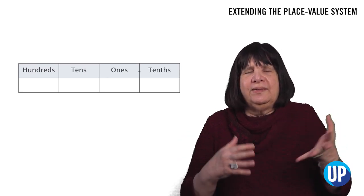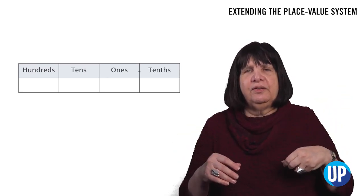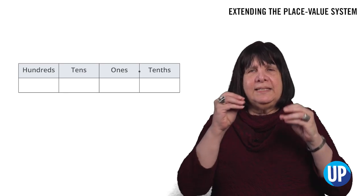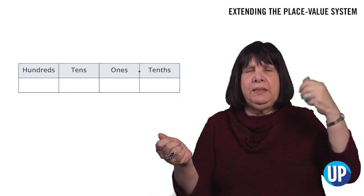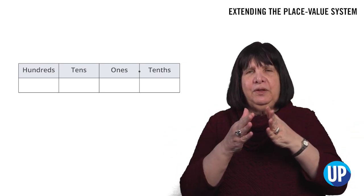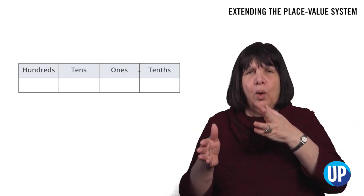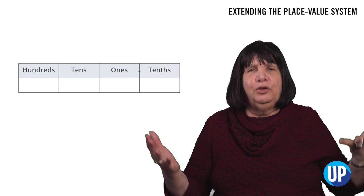If we do, we lose the symmetry of the place value system because what we want is 10 being the opposite of tenths and hundreds being the opposite of hundredths. And if you have two columns in the middle with ones and a decimal point, you kind of lose it all.